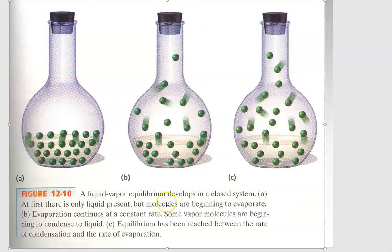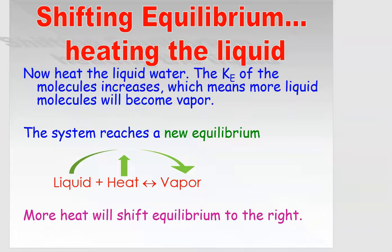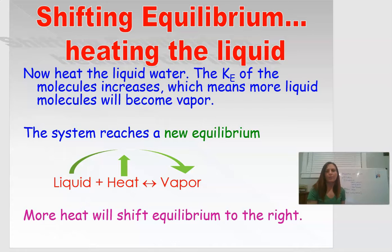So once we have this equilibrium established, we can start to shift the equilibrium by either heating or cooling the system. So we're going to start with what happens to our equilibrium if we heat the system in this closed system.